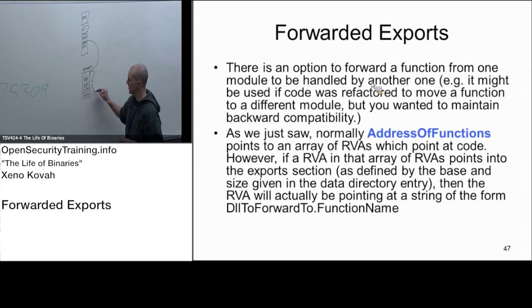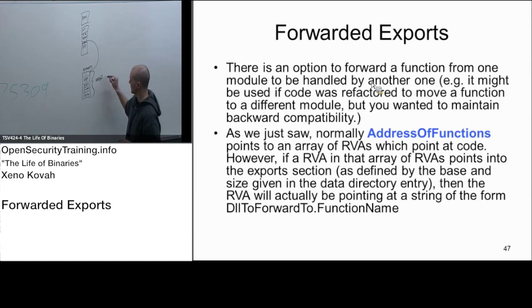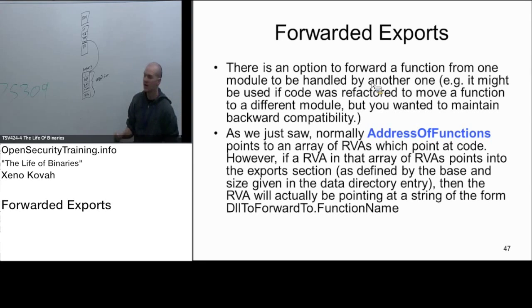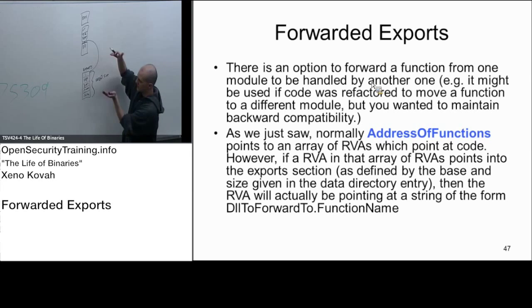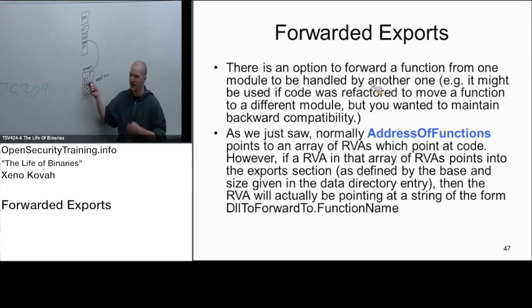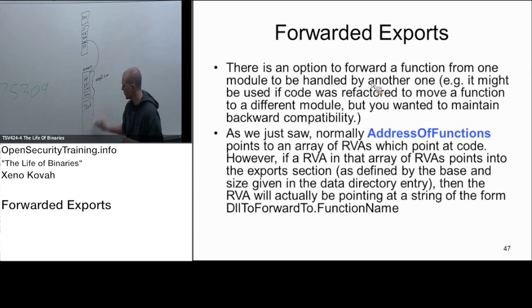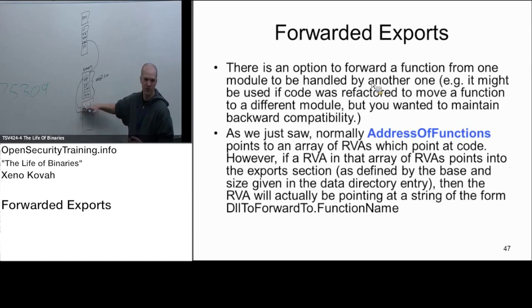All of that is actually specified by the data directory pointing here. The data directory zero dot size specifies all of the export information. Whereas previously the size in these data directories would just point at that first-level structure, here the data directory size says it covers all of that information. Normally, export address table entries point somewhere into your dot text section - pointing RVAs at functions like printf, malloc, things like that.